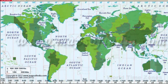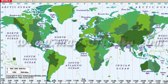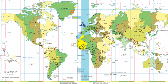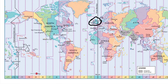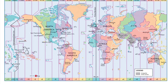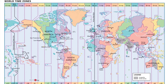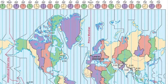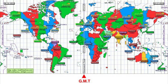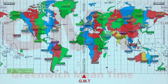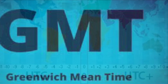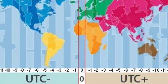It starts at midnight — 0:00. This place is London, Greenwich, which is correct. The time starts in London. This map is GMT, which is Greenwich Mean Time. Greenwich Mean Time is also called UTC plus or UTC minus.